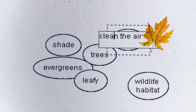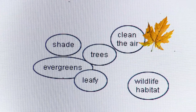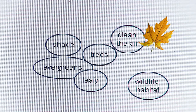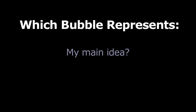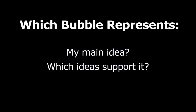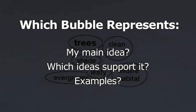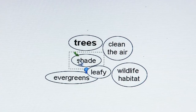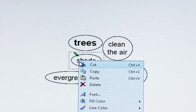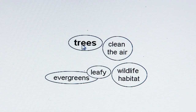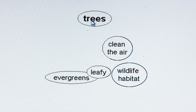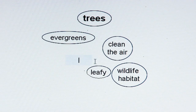When I am ready to organize these ideas, I take a closer look at the bubbles to see: which bubbles represent my main idea, which ideas support it, and could any of the bubbles serve as examples? If there are any ideas that no longer fit, I go ahead and delete them. I can freely move my ideas around so it is clear which ones are the main idea, supporting points, and examples.